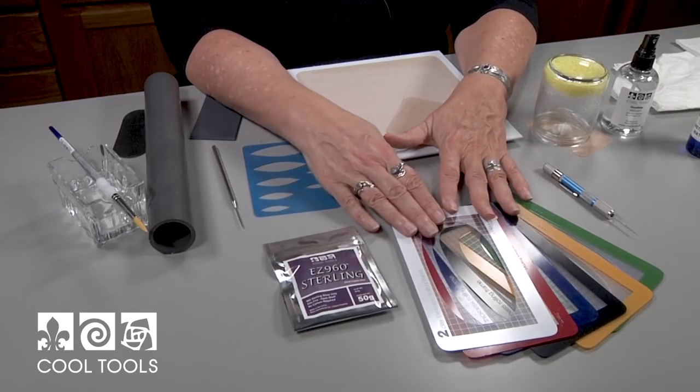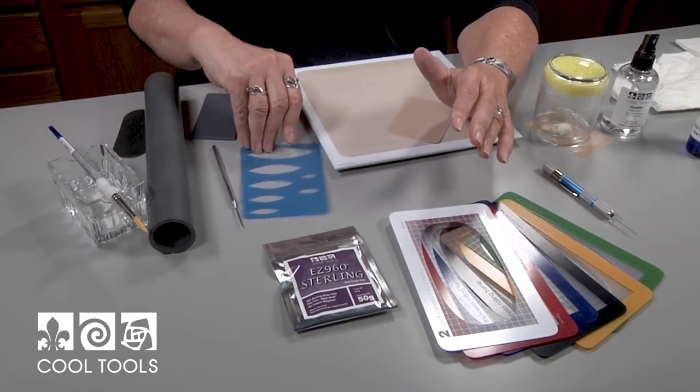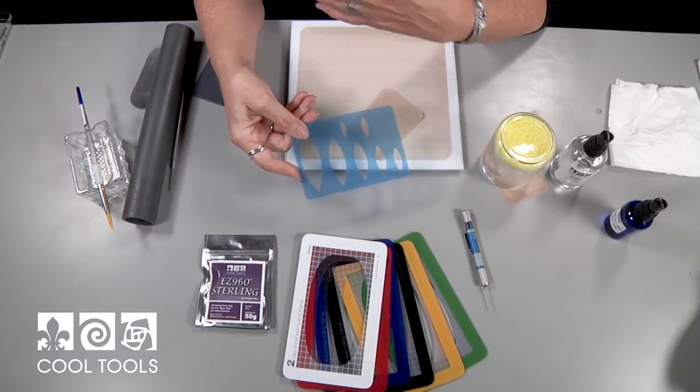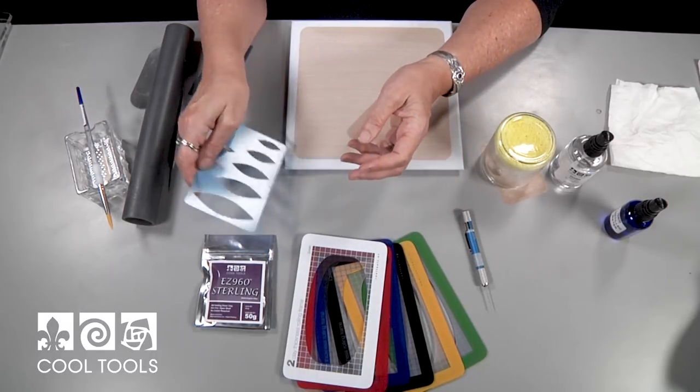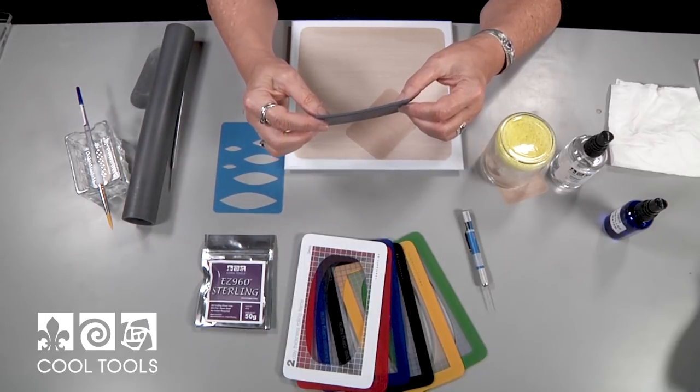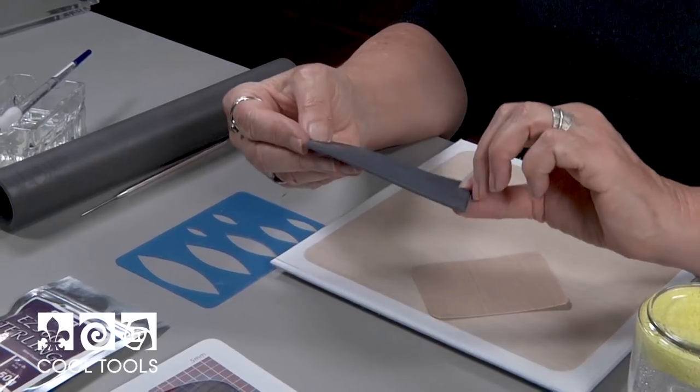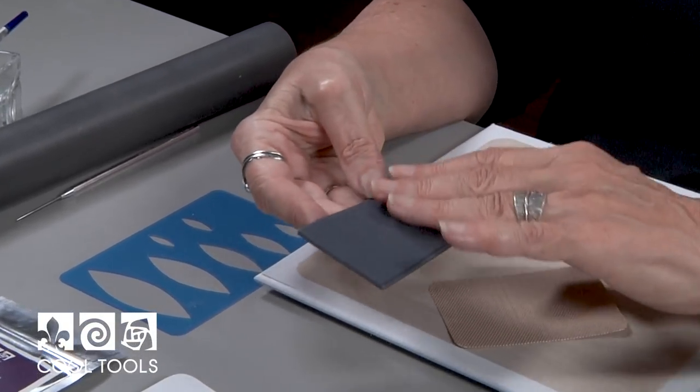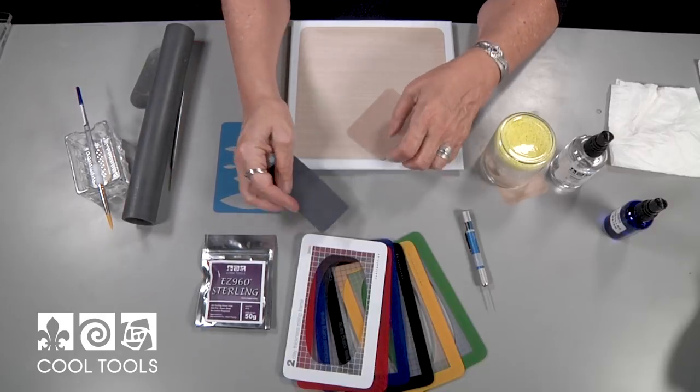We're going to need some thickness frames. I'm using this particular template for this project but once you know the technique you can work with any shape you want to work with. We're going to work with this texture which is Texture Tile Crackle Fine Line. I love this. I use this texture for a lot of things but this is what we're going to use for this particular project today.